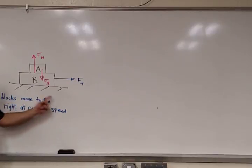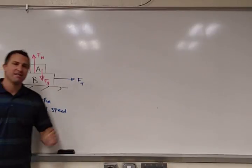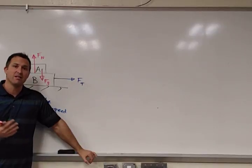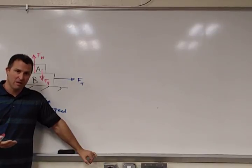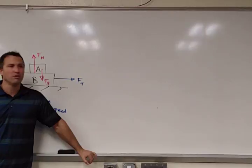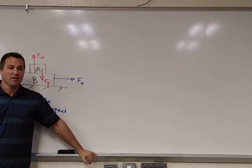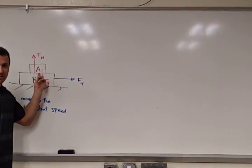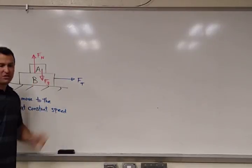Now, let's take a look at this statement here. The blocks move to the right with constant speed. It means they're moving in the same direction at the same speed. They have a constant velocity. Both blocks individually have a constant velocity. That means this block up above here, block A, has zero acceleration.